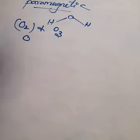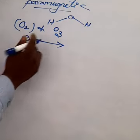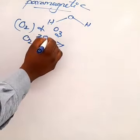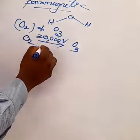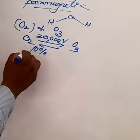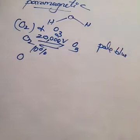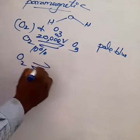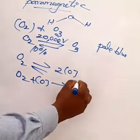Preparation of ozone in the laboratory: by passing electric discharge through oxygen at a potential of about 20,000 volts, about 10% of oxygen is converted into ozone. The remaining mixture is known as ozonized oxygen. Pure ozone is a pale blue gas obtained by fractional distillation of liquefied ozonized oxygen. Oxygen is first converted into atomic oxygen, which then reacts with O2 to give O3.